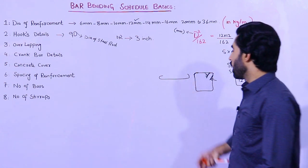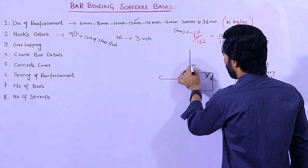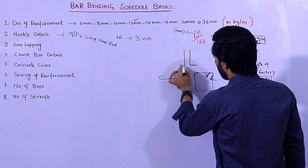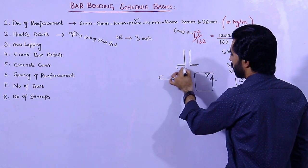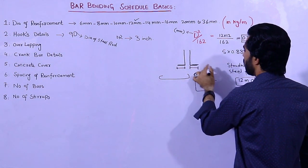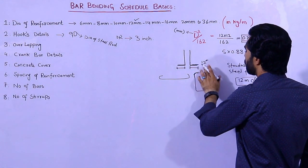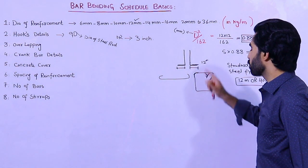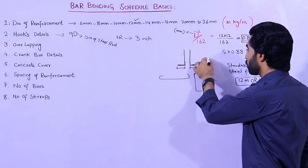For a column, this length is also called band length or legs length. It should not be less than 12 inches, or you can say it should not be less than 24D. This is very important especially for columns.